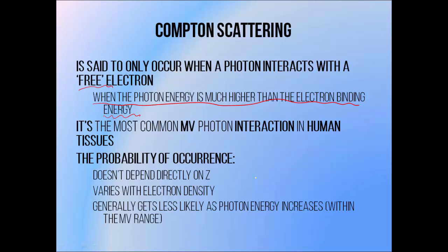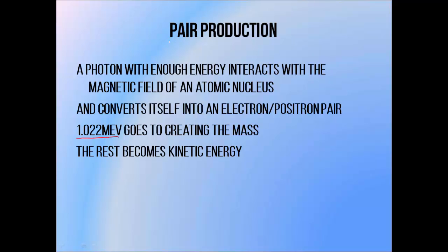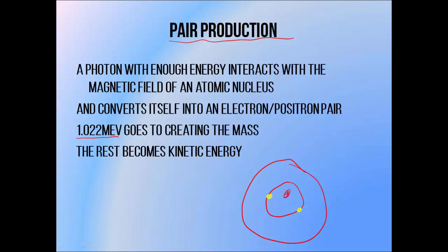At fairly high energies, above 1.022 MeV, photons can start to undergo pair production. This one doesn't actually involve photons knocking electrons off atoms, so it doesn't cause ionization directly, but it does produce secondary particles that do. During pair production, a photon comes in and interacts with the magnetic field of an atomic nucleus. This energy is converted into an electron-positron pair. Part of the photon's energy is used to create the mass of the electron-positron pair, and the remainder is divided up amongst the two particles as kinetic energy. There are two particles created in this process, that's why it's called pair production.